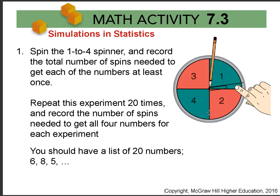For example, if I spun and got 1, then 4, then 1 again, then 3, then 4 again, then 2 — once I've hit all four numbers, I record that number. You'll repeat that, spinning to get all four numbers 20 times, and record the number of spins needed.